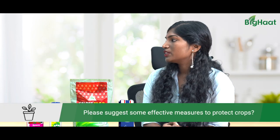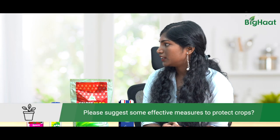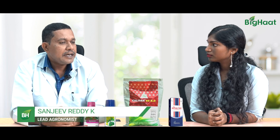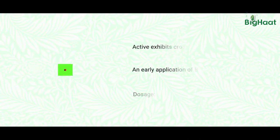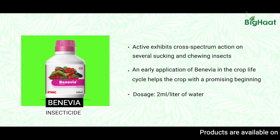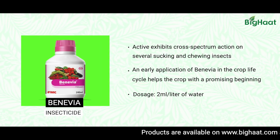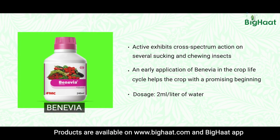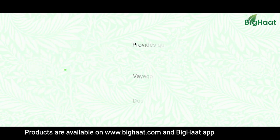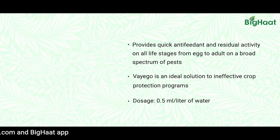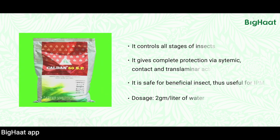Can you please tell us about some of the management techniques? Spraying insecticides is a great technique to manage this. There are a lot of innovative products available in the market. One such product is Benivia, used at younger stages of the crop, usually at 2 ml per liter. Another one is Viago, which can be used at 0.5 ml per liter.